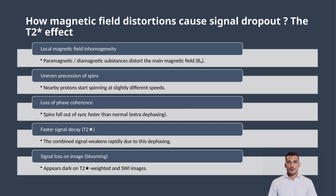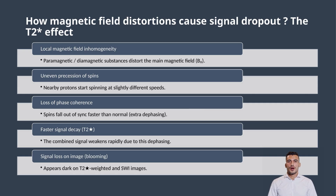Everyone's rhythm gets messed up. These little spins fall out of sync — they stop dancing together. This is called loss of phase coherence, and if they're not in sync anymore, their combined signal — the thing MRI detects — becomes weaker and weaker very fast. That's the T2* effect. The signal decays quicker than usual. On the image, it looks like a dark patch, or what we call signal dropout or blooming. So anywhere there's blood, iron, or calcification, that local magnetic chaos makes it go dark on SWI.